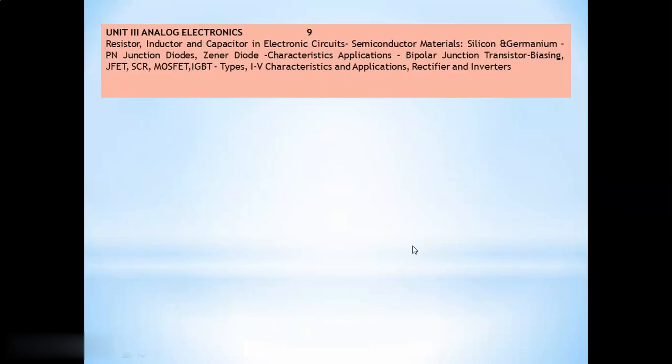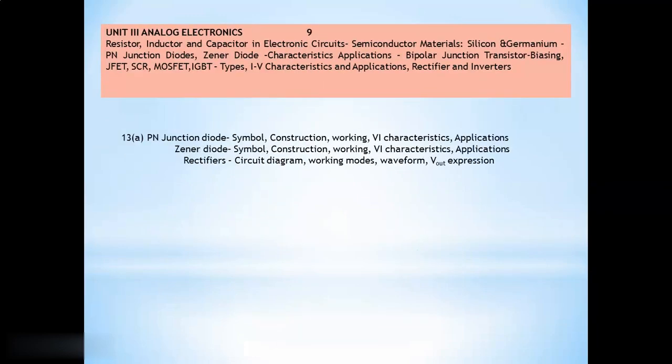And if you take third unit analog electronics. In 13A, PN junction diode, Zener diode and rectifiers are our expectation. If you take PN junction diode, Zener diode, you have to know about its symbol, construction, working, VI characteristics and applications of these two diodes.